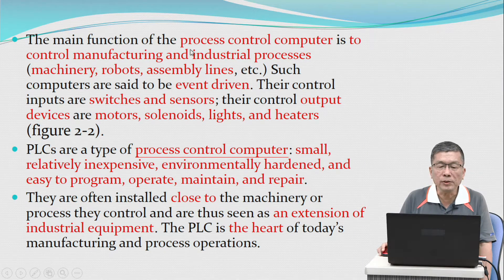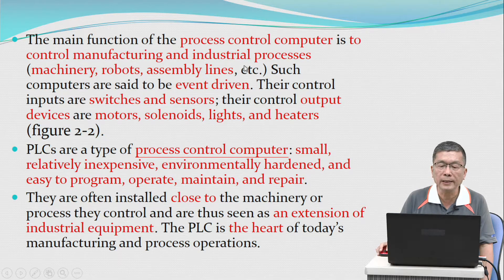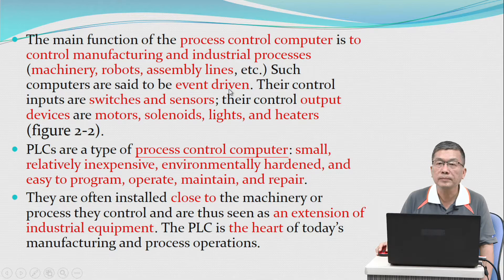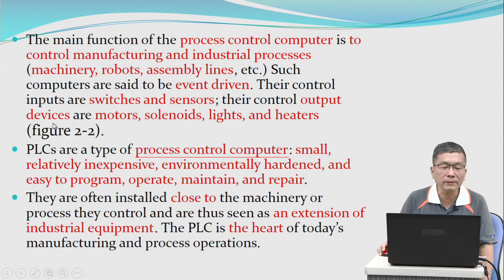The main function of the process control computer is to control manufacturing and industrial processes — machinery, robots, assembly lines, etc. Such computers are said to be event driven. Their control inputs are switches and sensors. Their control output devices are motors, solenoids, lights, and heaters. See Figure 2.2.